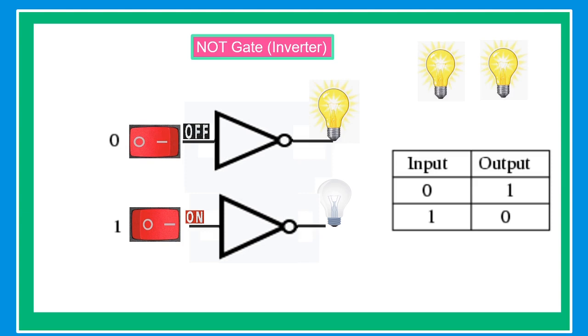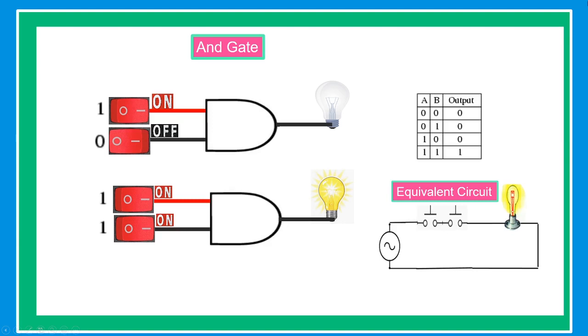If it receives 0 as an input, it produces 1 as an output. Similarly, if it receives 1 as an input, it produces 0 as an output.